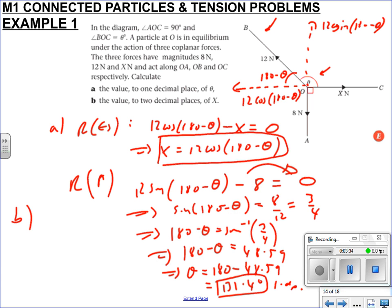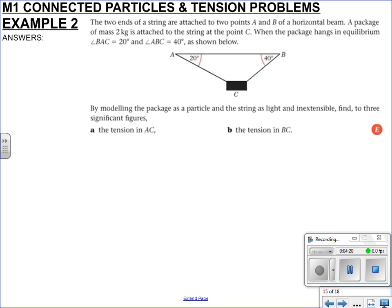Part b says find the value of X. We know that X is from earlier, so now we can just substitute in our value of theta which is 131.4, but I'll use my exact value in my calculator. So 12 cos(180 - θ) gives us 7.94 newtons to 2 dp as asked for. In these mechanics videos, if you think I've made a mistake, make sure you tell me at the earliest opportunity so we can fix it.